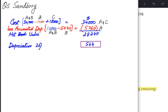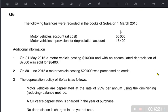Applying 20% to the net book value of 28,240 gives depreciation for this year of 5,648. This is the final answer to calculate depreciation for motor vehicles using reducing balance method.